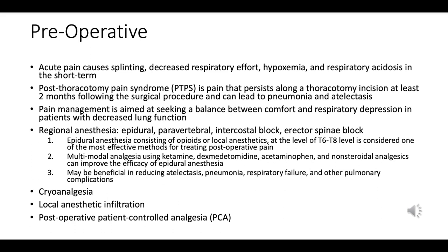Effective pain management post-thoracotomy aims to balance patient comfort and preventing respiratory depression. Strategies include regional anesthesia techniques like epidural, paravertebral, intercostal, and erector spinae block. Epidural anesthesia — administering medications like opioids or local anesthetics at the T6 to T8 level — is seen as highly effective for controlling post-thoracotomy pain.